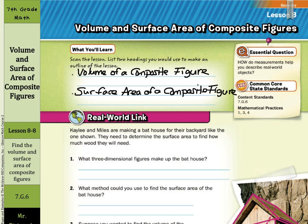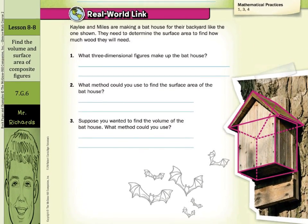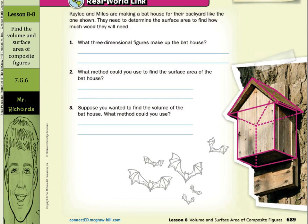For our real-world link, Kaylee and Miles are making a bat house for their backyard like the one shown. They need to determine the surface area to find out how much wood they will need. What three-dimensional figures make up the bat house? Here I see a rectangular prism and a triangular prism.